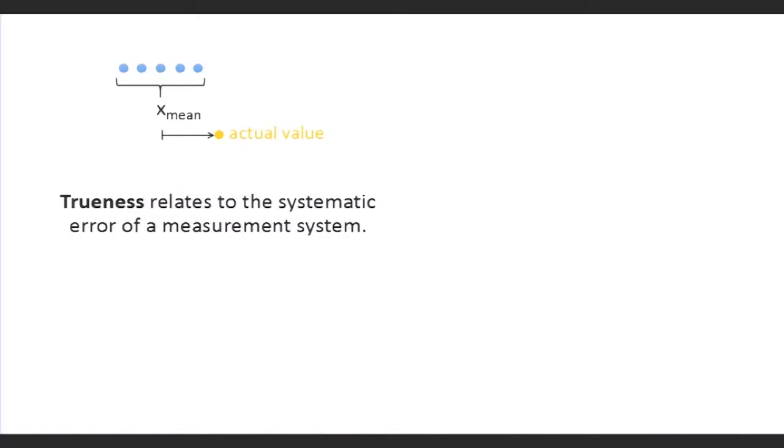As previously mentioned, when you have a result, it is different from your actual value. And this is referred as trueness and it is a systematic error of your measurement system.